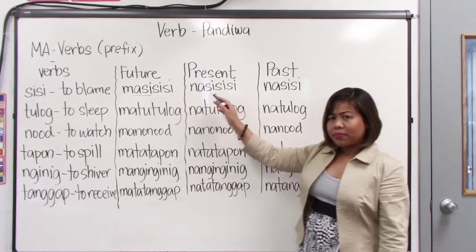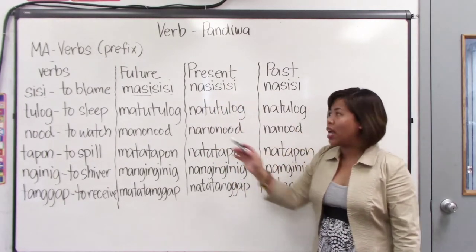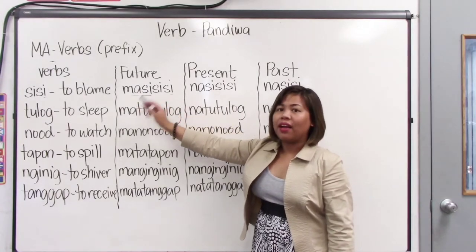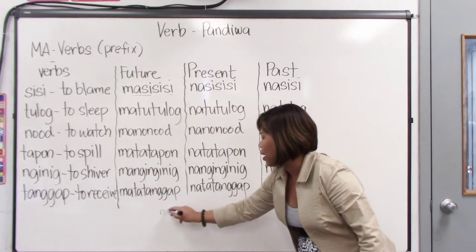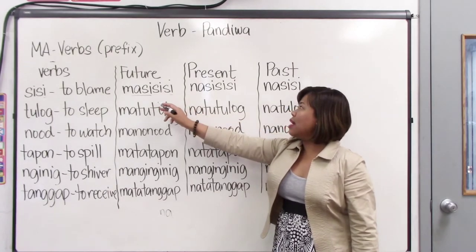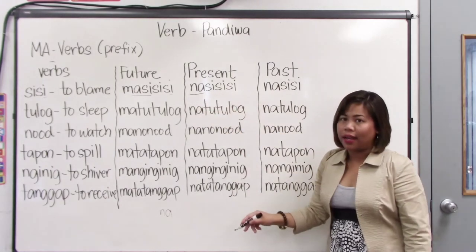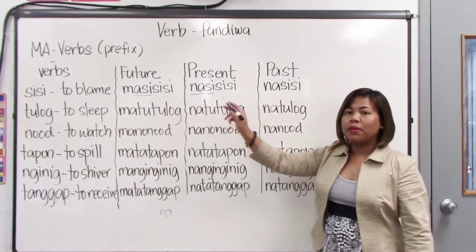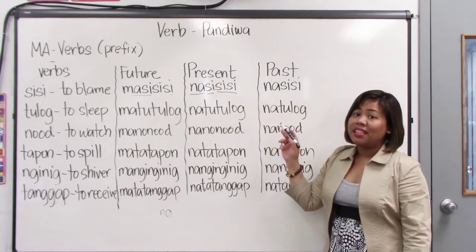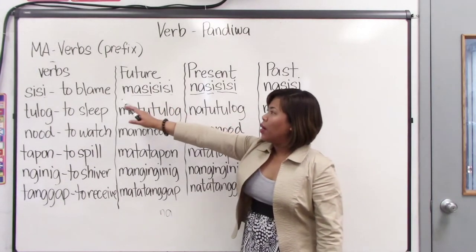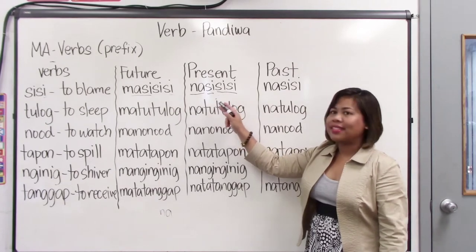Look at the past tense. In the previous lesson, when we form the present tense of the mag verb, we also change mag into nag. This time, from ma, we change it to na — N-A. So ma-si-si-si will become na-si-si-si. It's the same — we add the prefix na instead of ma, copy the first syllable of sisi which is si, and then copy the entire verb sisi which means to blame. So: base form sisi, future ma-si-si-si, present na-si-si-si.